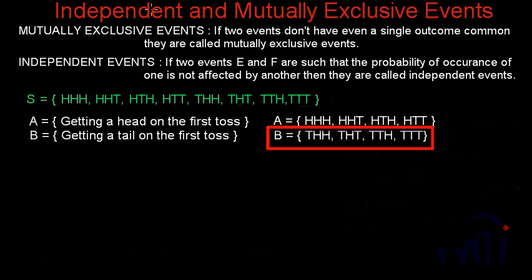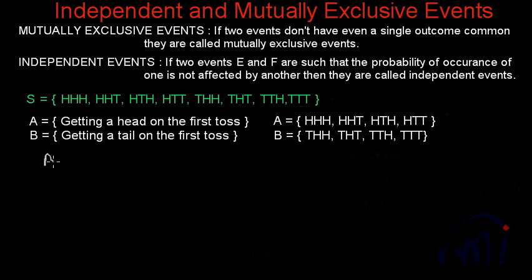Event B's outcomes with tail on the first toss will be: {THH, THT, TTH, TTT}. So these two events are actually mutually exclusive. If we look at the two sets of favorable outcomes of event A and event B, there are no common elements. So A intersection B will be a null set.